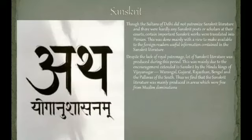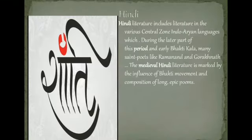Literature in South: In South India, Pampa, Ponna and Ranna became famous as the three jewels of Kannada literature. Ramayana was rewritten in Tamil by Kamban, and Mahabharata was translated into Telugu by Tikkana and Nannaya. This was done for the easy understanding of the local population.